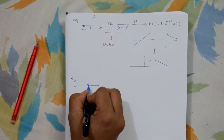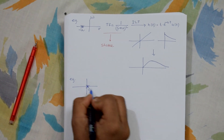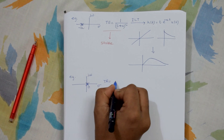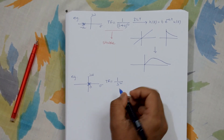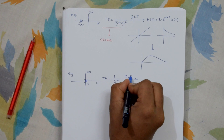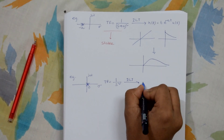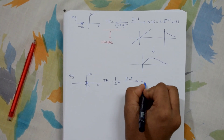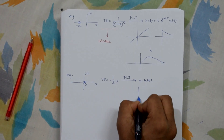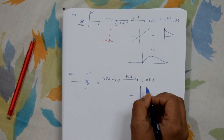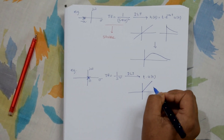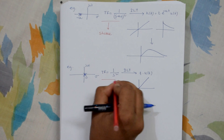Now let's have two repeated poles at the origin, i.e., at zero. The transfer function is 1 by s². The inverse Laplace transform gives t · u(t), which is a ramp function starting from zero. This is an unstable one.